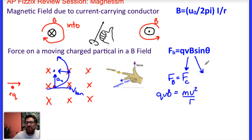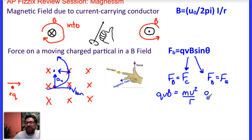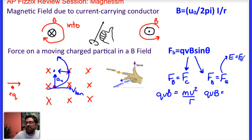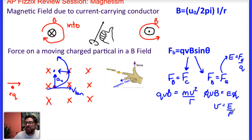You'll also see instances where an electric field negates the magnetic force. In that case, the magnetic force equals the electric force. Since the electric field is the electric force per unit charge, the electric force is qE, and the charges cancel out, leaving a simple equation. For equilibrium, the required velocity is the ratio of the electric field to the magnetic field: v = E/B. These are variants of the force on a moving charged particle in a magnetic field.